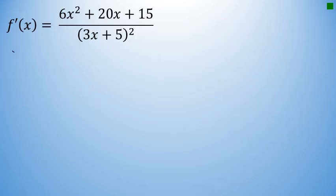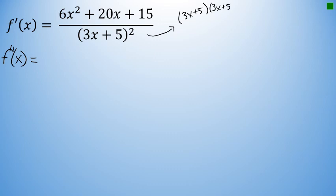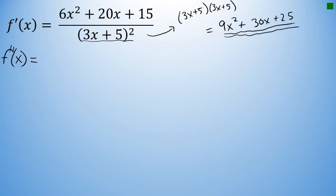Before beginning the second derivative, I'll note that the denominator (3x + 5)² equals (3x + 5)(3x + 5), which expands to 9x² + 30x + 25. At different points as I apply the quotient rule for the second derivative, instead of writing (3x + 5)² I'll refer to 9x² + 30x + 25, because those two expressions are identical and sometimes the polynomial form is easier to work with.